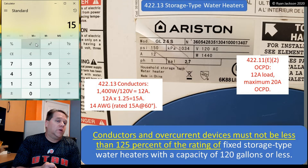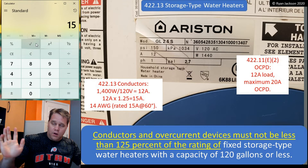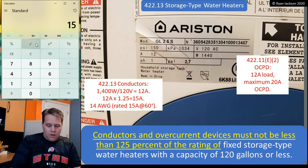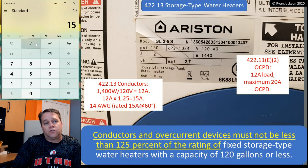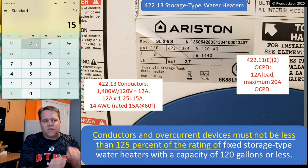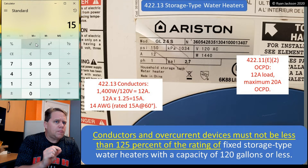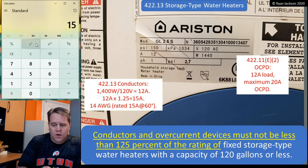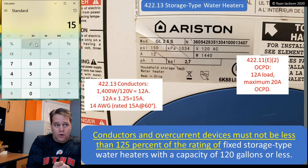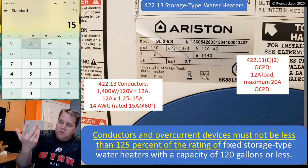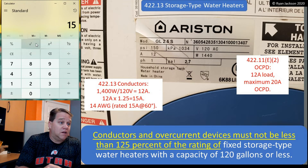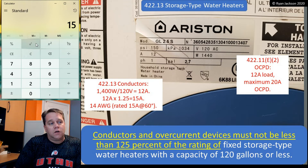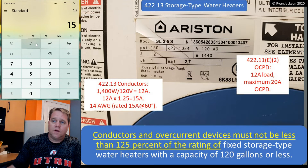15 amp wire we know is 14 gauge. I could put it on a 15 amp breaker — done. Or if I wanted to, when sizing the overcurrent device, I'd go to section 422.11 E2, which says for a single non-motor operated appliance that's this small, maximum 20 amps for the breaker. I don't have to use a 20 amp breaker, but if I did, I'd have to use 12 gauge wire. I could also use a 15 amp breaker and 14 gauge wire — that would be fine too.